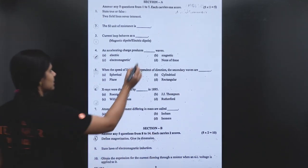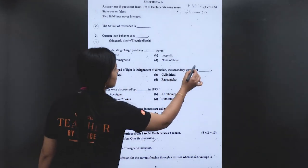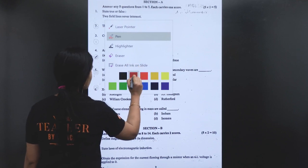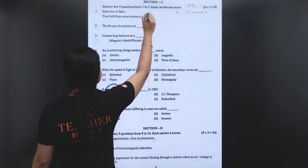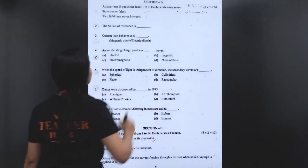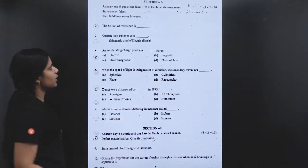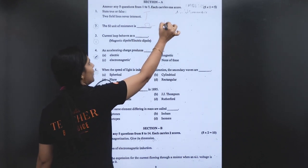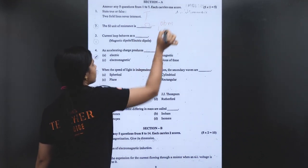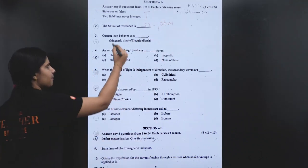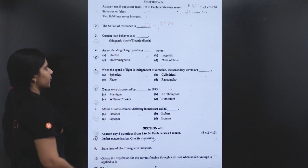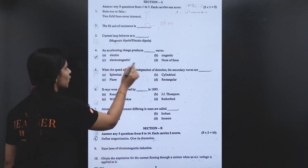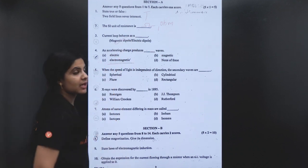This answer relates to properties of electric field. So this answer is True. Then, the unit of resistance — that is Ohm. Ohm is the unit.